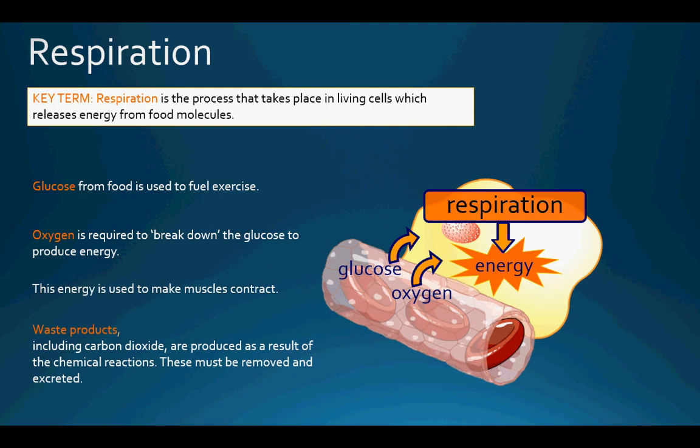In summary: glucose from food fuels exercise, oxygen breaks down the glucose to help produce energy creating respiration, and as a result of the respiration and energy production, waste products such as carbon dioxide are produced and must be removed and excreted.